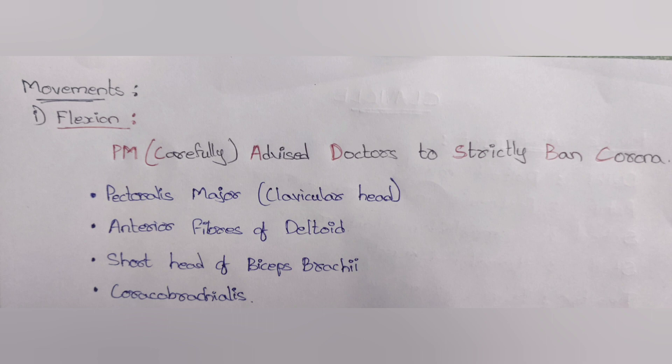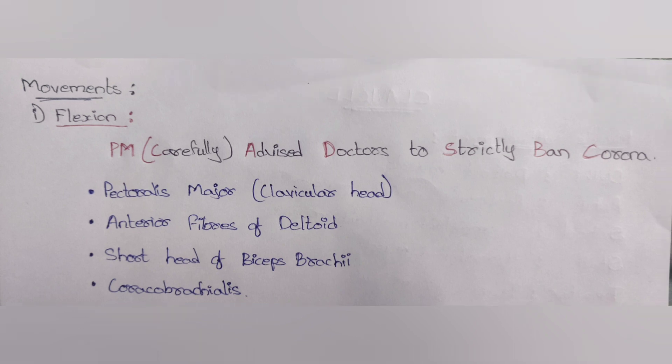The next concept is movements of the shoulder joint. For flexion, the mnemonic is 'PM carefully advise doctors to strictly ban corona': PM for pectoralis major (clavicular head), C for anterior fibers of deltoid muscle, A for anterior fibers of deltoid, B for biceps brachii, and C for coracobrachialis.